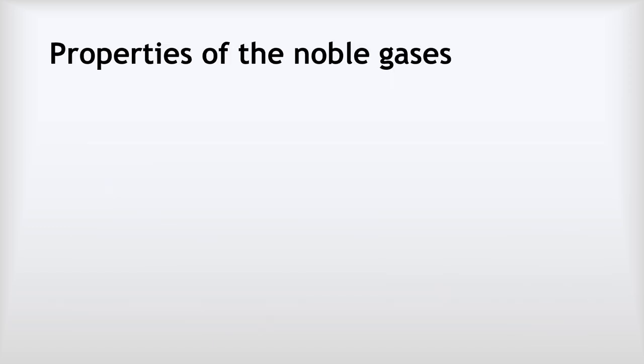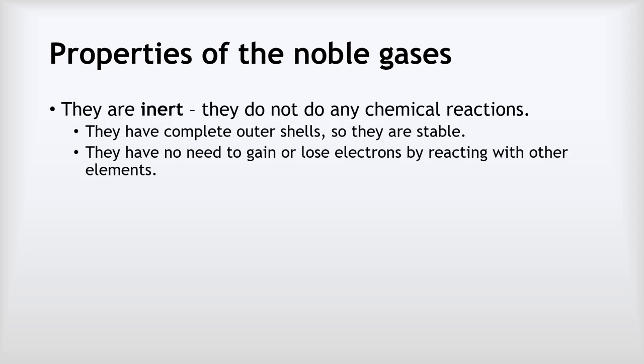Their properties are really determined by that complete outer shell. The number one thing that's important about the noble gases is they are inert — they do not do any chemical reactions. That's not quite true at A-level or IB chemistry where you'll learn there are a couple of reactions, but there really aren't many at all. They have complete outer shells so they are stable, which is why they don't react with other things. They have no need to gain or lose electrons because they've already got complete shells.